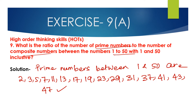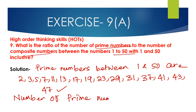So how many prime numbers are there? Counting: 1, 2, 3, 4, 5, 6, 7, 8, 9, 10, 11, 12, 13, 14, 15. The number of prime numbers is 15.